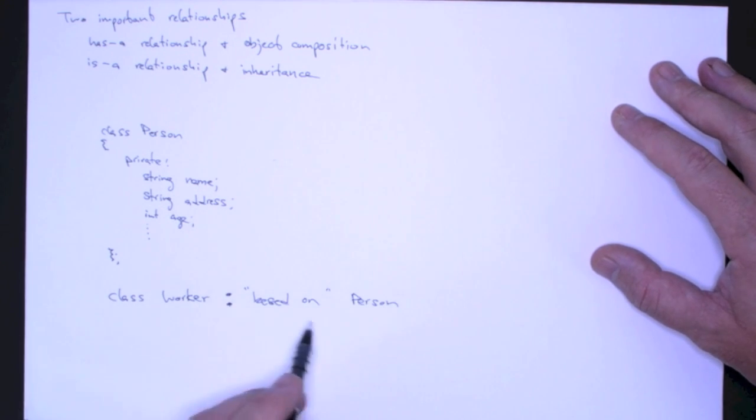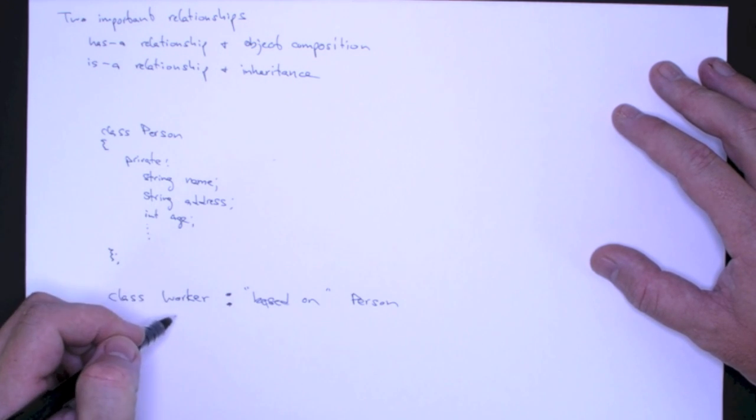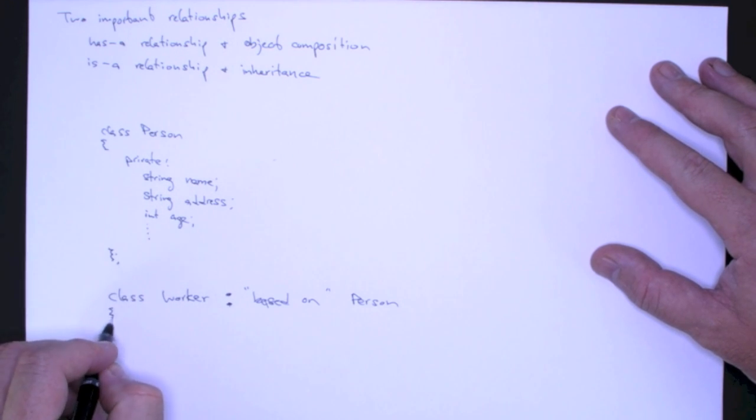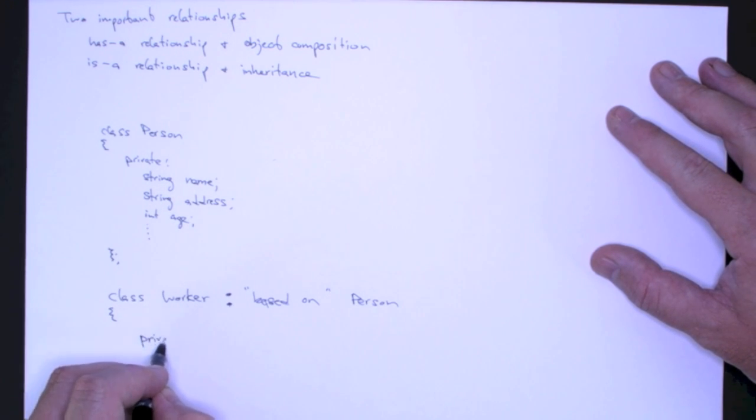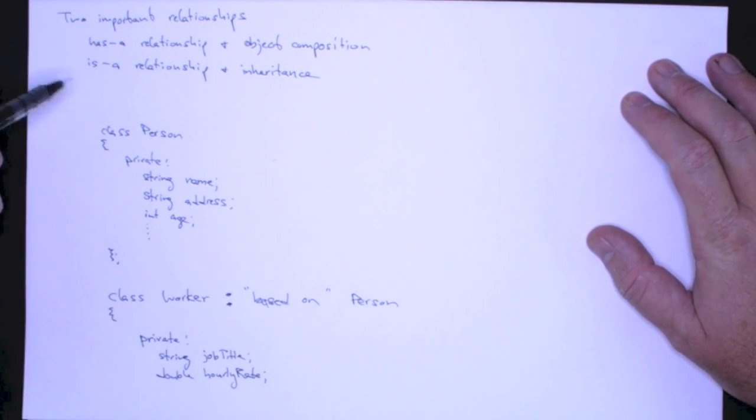Because we're basing our worker class on this person class, the worker also has a name, address, and age. Then, for example, they have the property job title, and they have, as a double, the hourly rate.